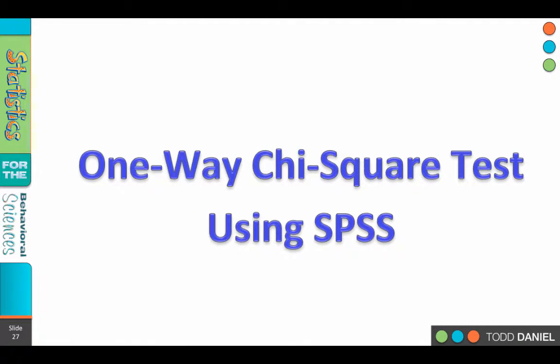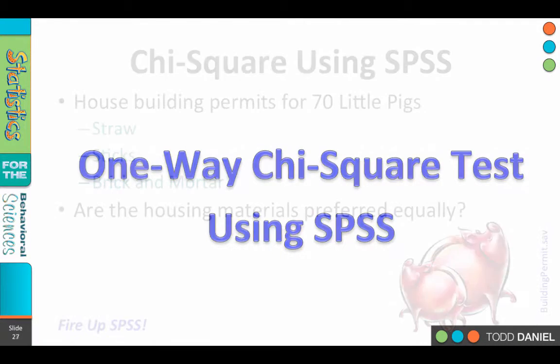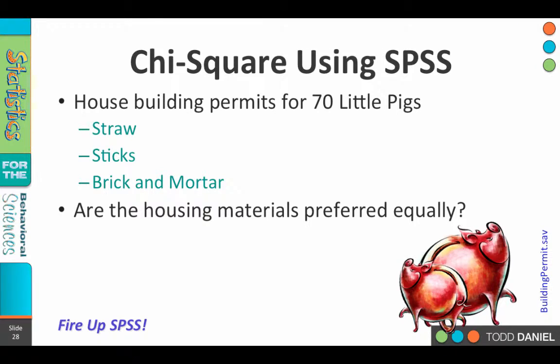We are now going to learn how to conduct a one-way chi-square test using SPSS. The dataset we'll be using is buildingpermit.sav, and it contains house building permits for 70 little pigs. The pigs have preferences for the type of material they use in building their houses: straw, sticks, or brick-and-mortar. Our question is: are the housing materials preferred equally? So fire up SPSS and get buildingpermit.sav ready to go.